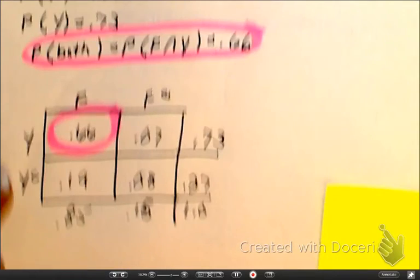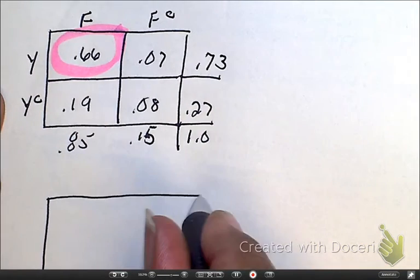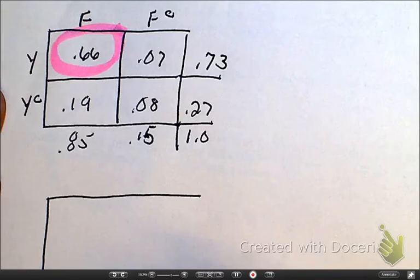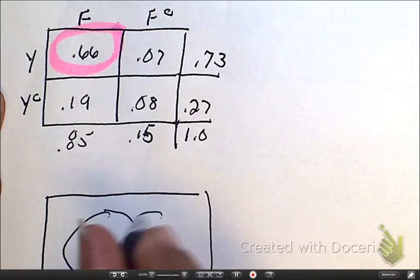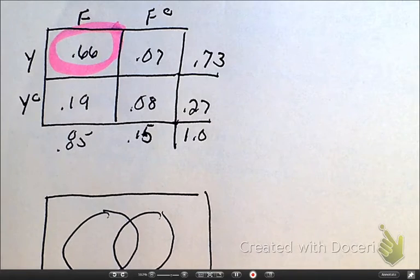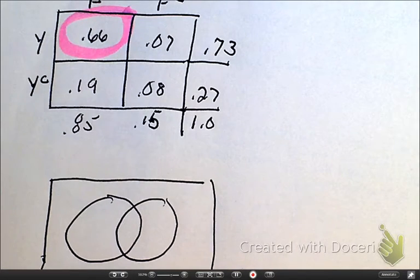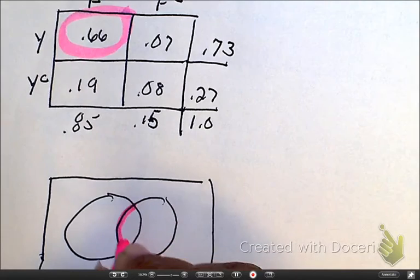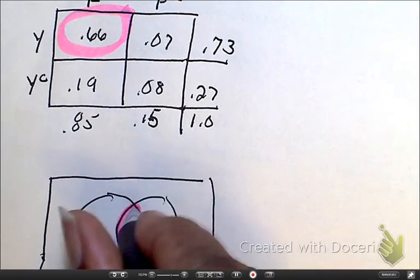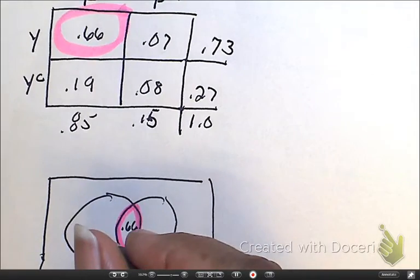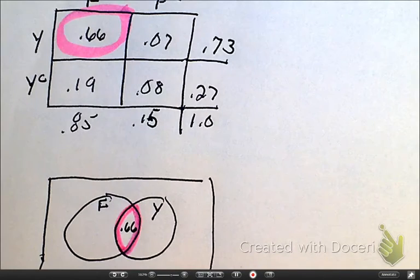Now let's get ready to make the Venn diagram. And as we make the Venn diagram, we're going to use the table, but you can do it without the table. We know that we always start off with what's in common, what is jointed, which is the middle, which is 0.66.